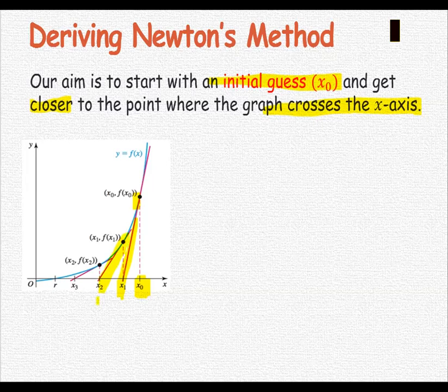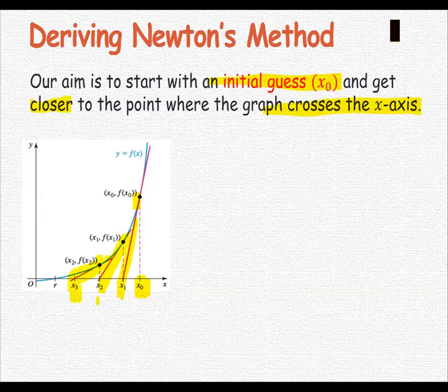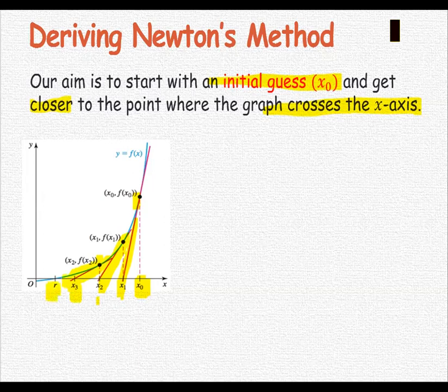Repeating the same process, use the ordered pair (x₂, f(x₂)) and the slope at x₂ to form the tangent line. The next tangent line crosses the x-axis at x-intercept x₃, and keep going until we get closer and closer to the goal, which is the x-intercept r.